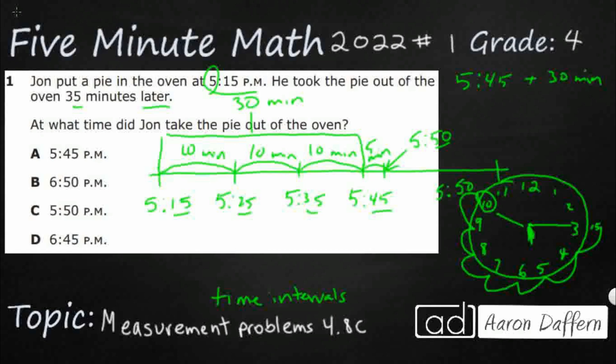But one of the downfalls of this particular strategy is this hour hand should have been moving. It's going to be closer to six now, really close to six. But either way, our answer here is going to be C, 5:50.